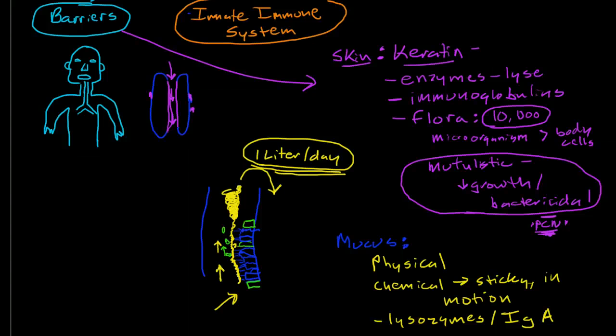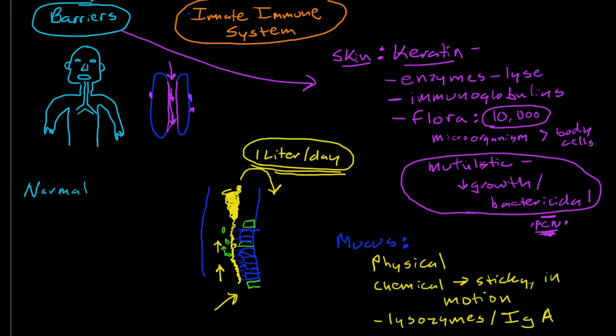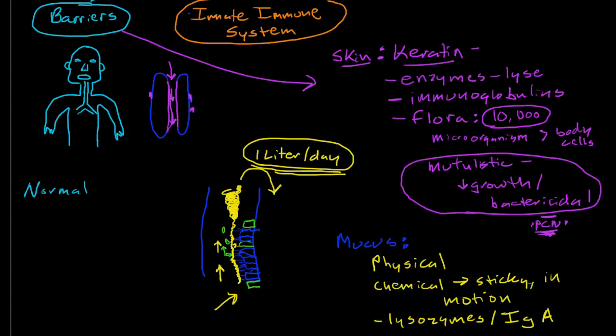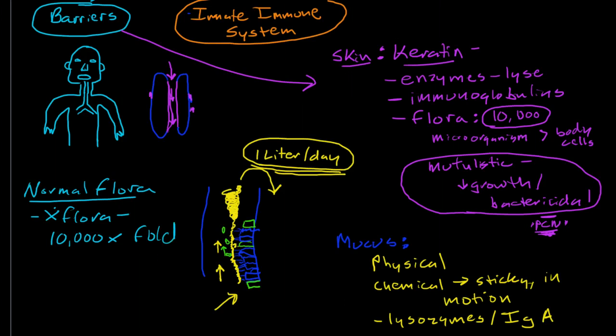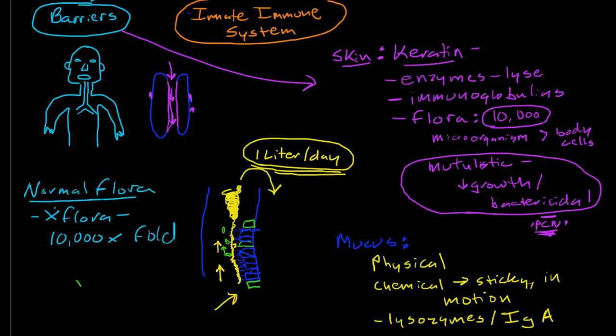I wanted to talk a little bit more about normal flora, which is a central component of the barrier defenses in our gut. Just to give you an idea of how important this is, we know that if we disrupt the normal flora in the gut, it increases our susceptibility to infection considerably. There have been mouse studies that show that when we eradicate the flora in the gut of a mouse, we increase their susceptibility to salmonella infection by 10,000-fold.